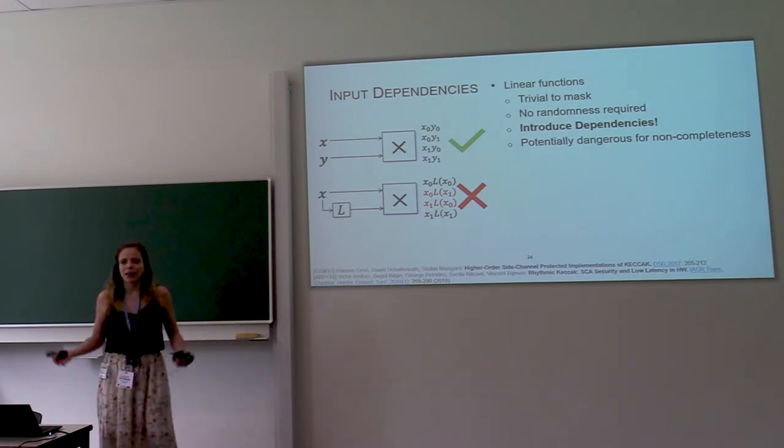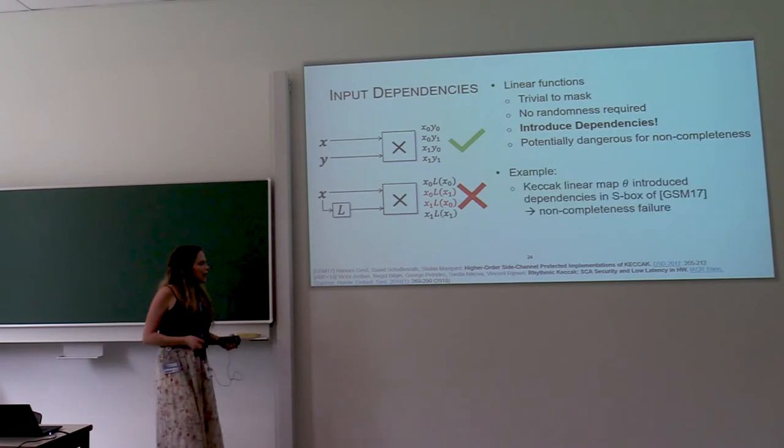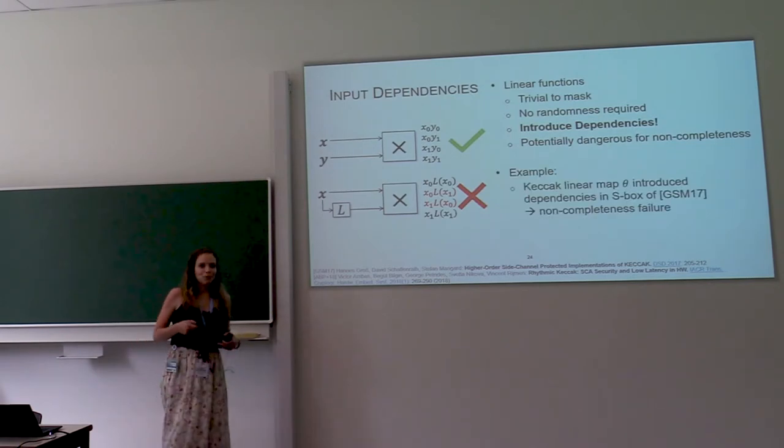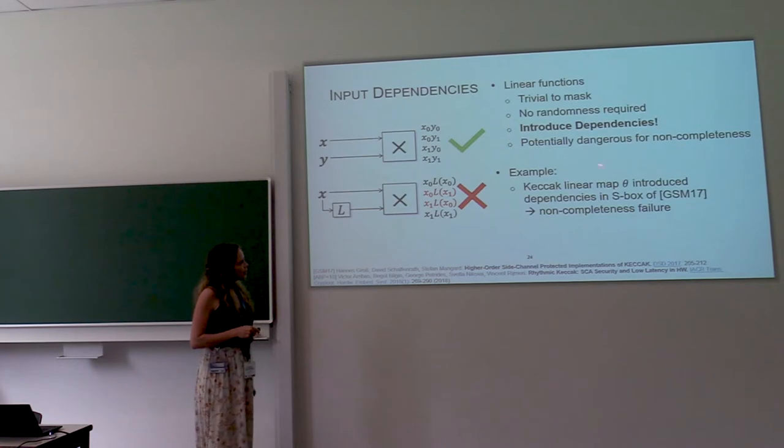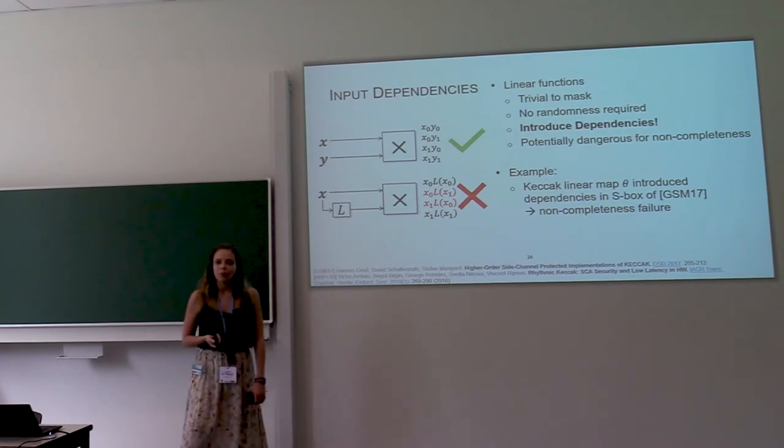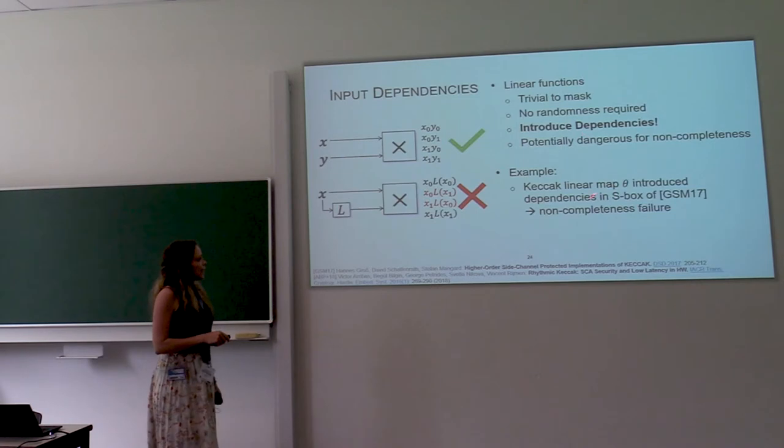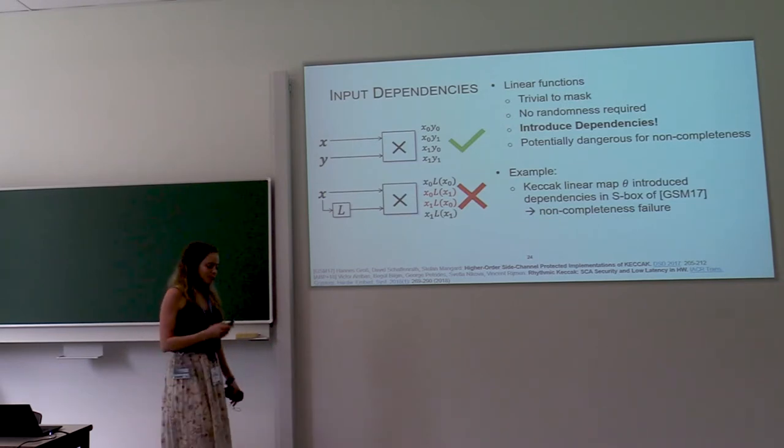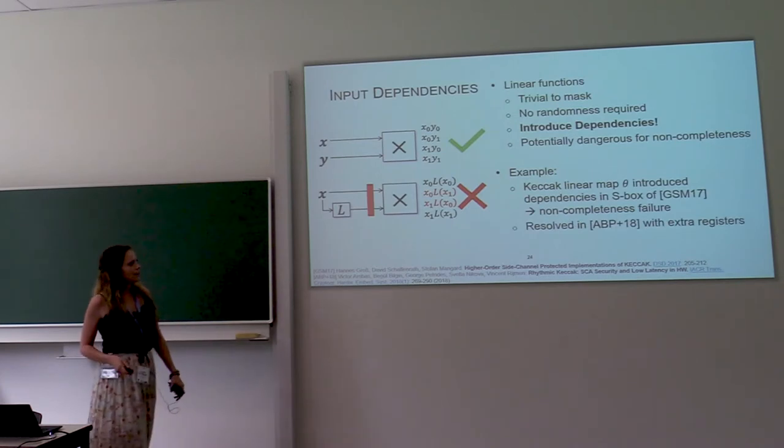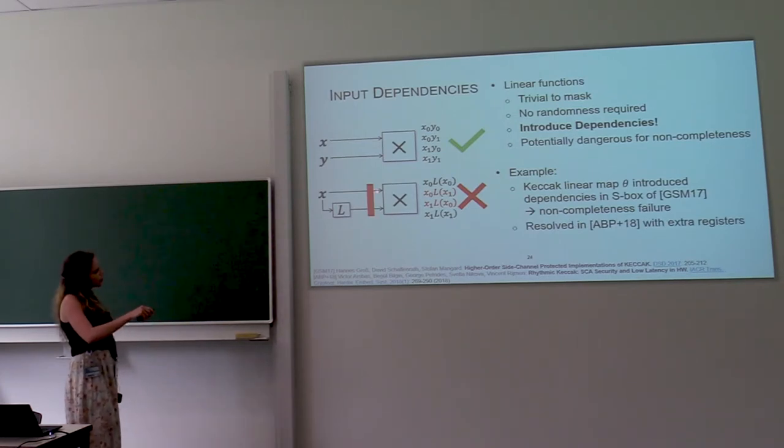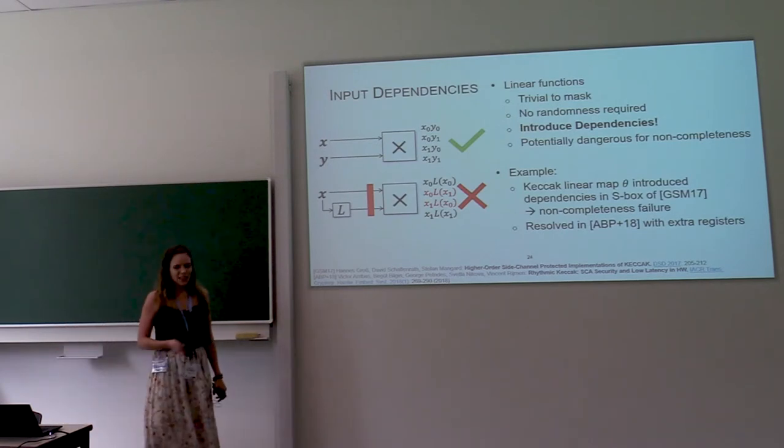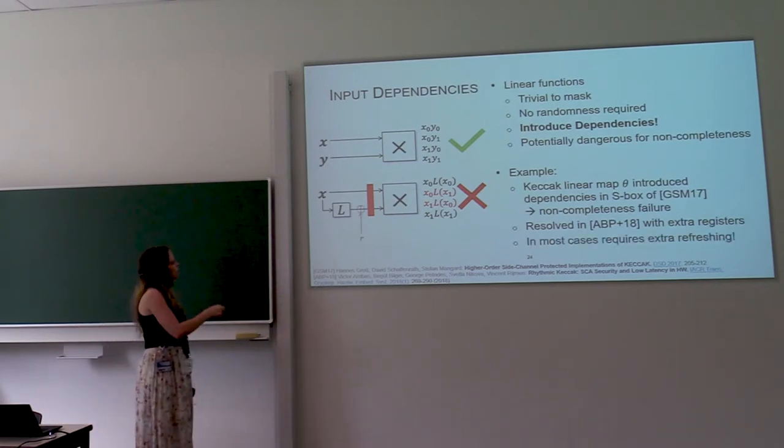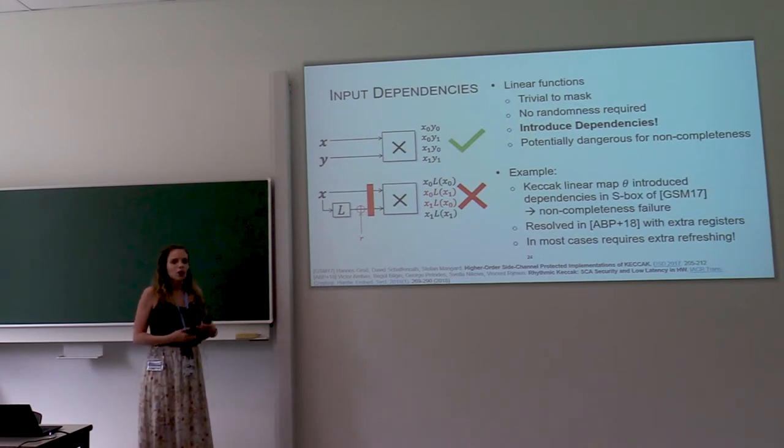If you look at the cross products here, we can see that they get composed shares of x, which means non-completeness is broken. Now, this example may seem a bit obvious, but if you're implementing an entire cipher, things are a bit less easy to detect. And it also happens in real life. Let's say there was a publication of a Keccak protected implementation where the S-box was perfectly fine. But in the entire cipher, there was a non-completeness failure because of the linear layer that was introducing the dependencies. So this was detected and then solved by placing an extra register. That wasn't enough in that case, but in general, and in this small case, you need also to add some extra randomness to really make sure that these two inputs are completely independent.